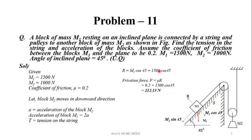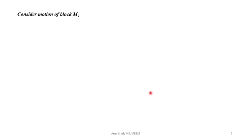R is 1500 cos 45, times 0.2, so friction force will be 212.13 N. Now we will consider motion of block M2.